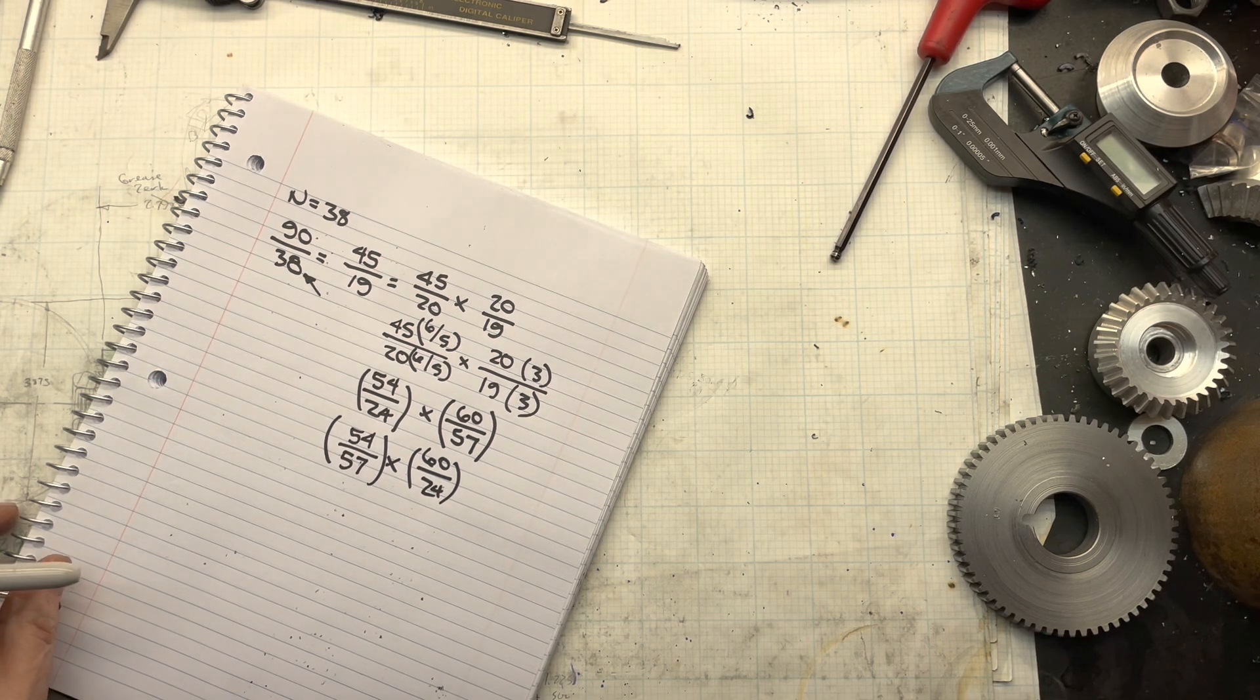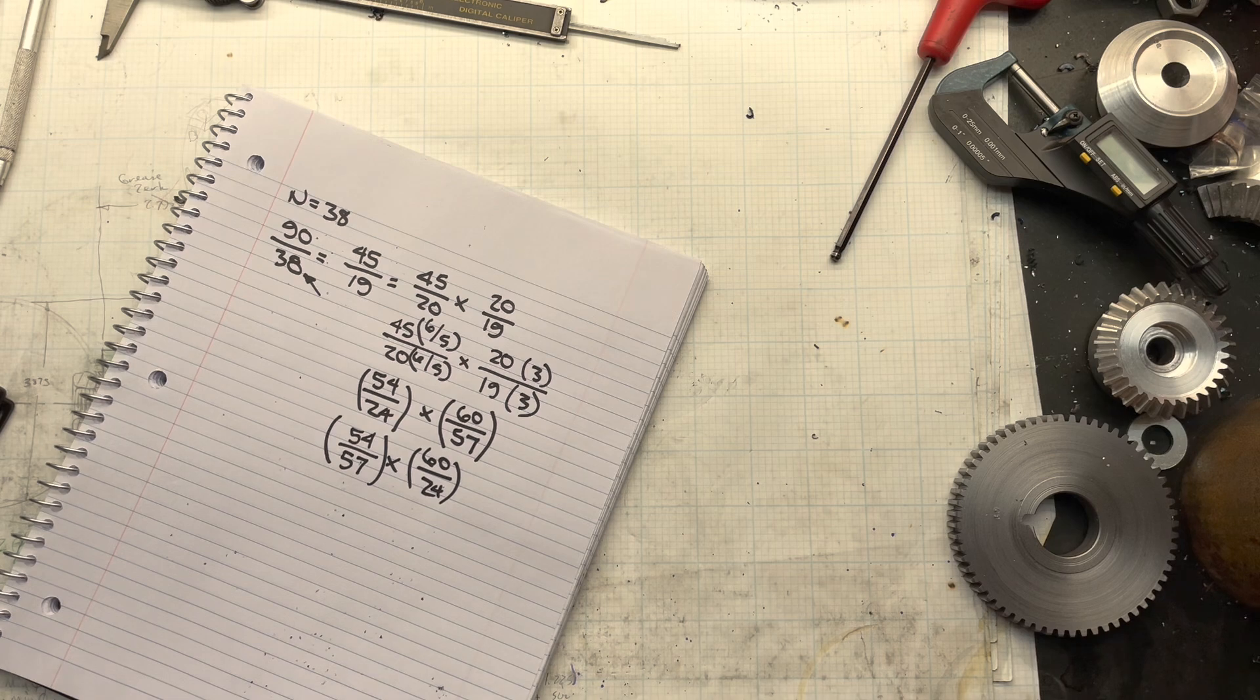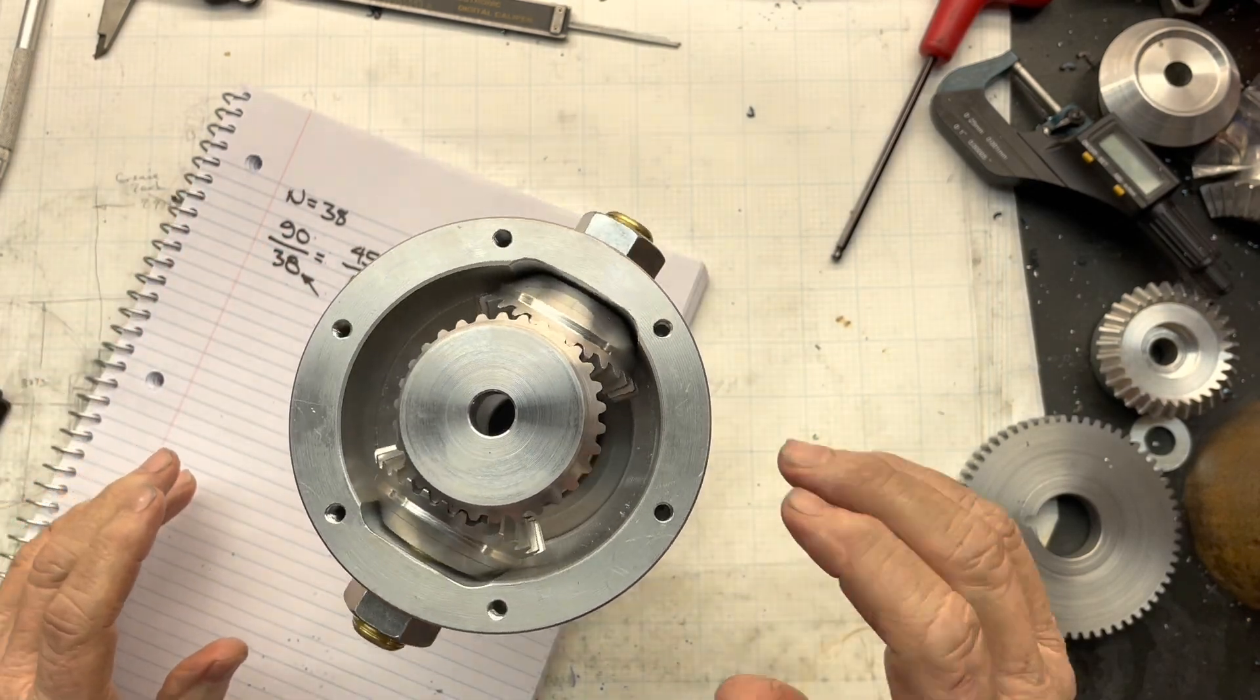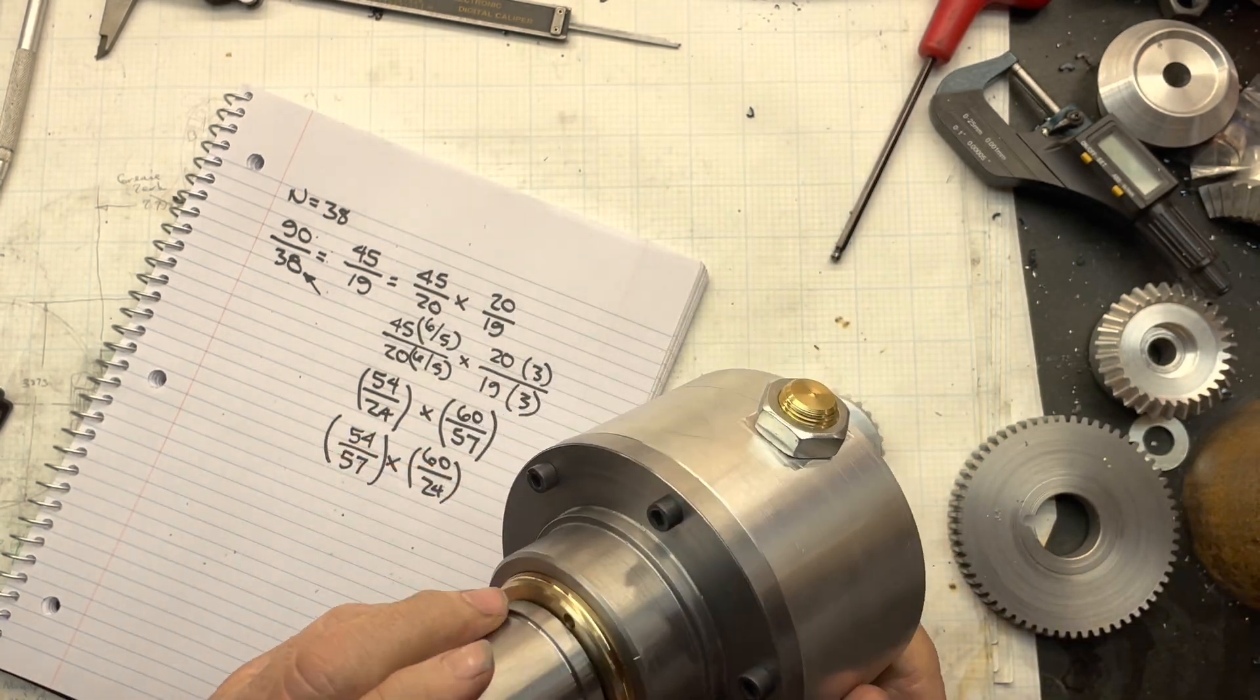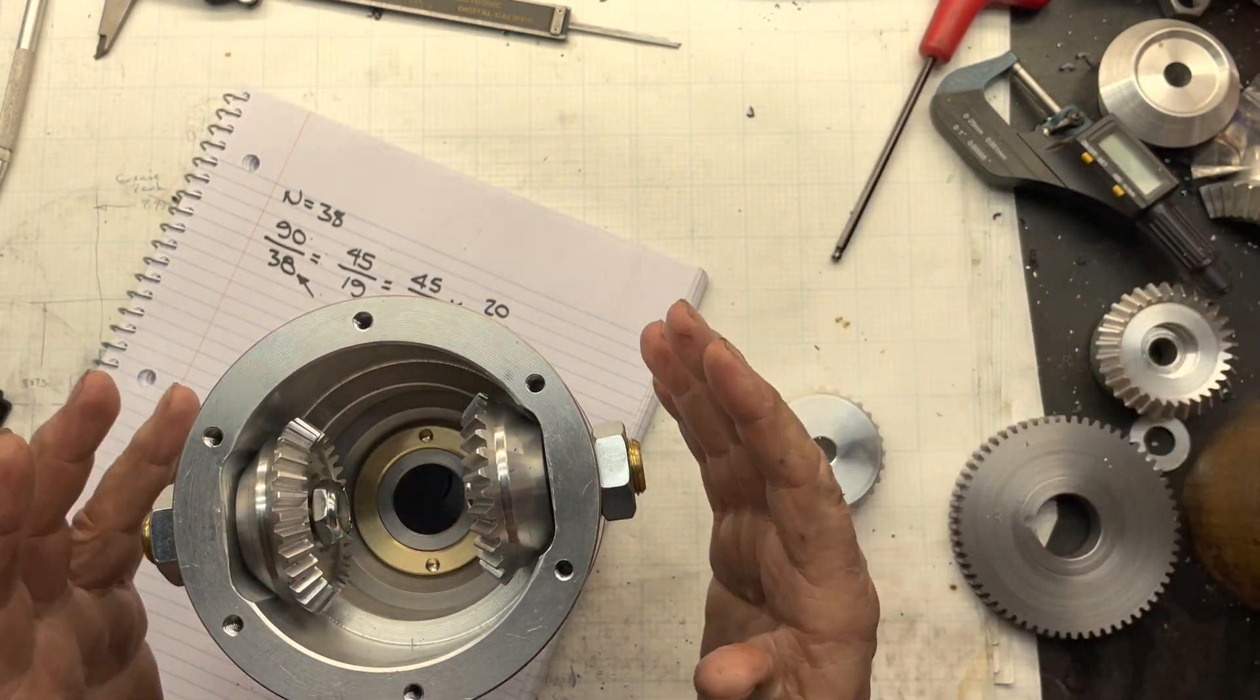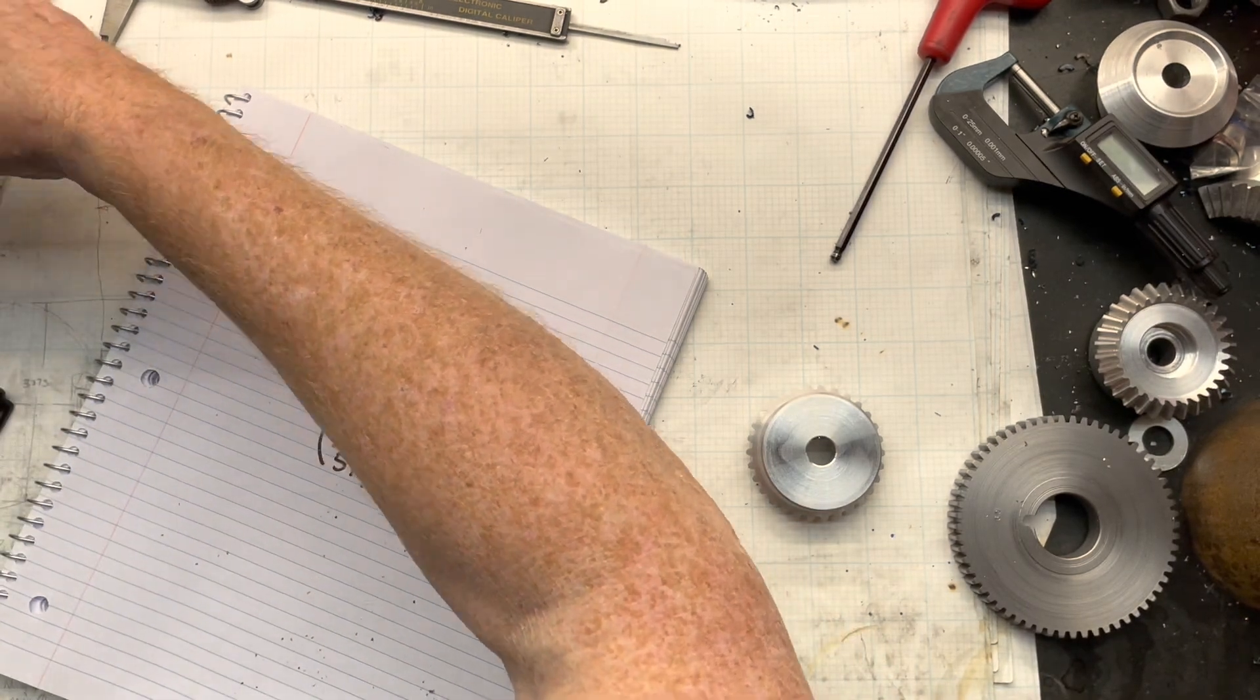But the only way to do that without having the prime number gear is by applying a differential. And that's what I'm working on here. And this will be the subject of a future video as soon as I get it complete. But what this will do is allow me to make prime number gears with relative simplicity and a little bit more math. But we'll talk about that another time.